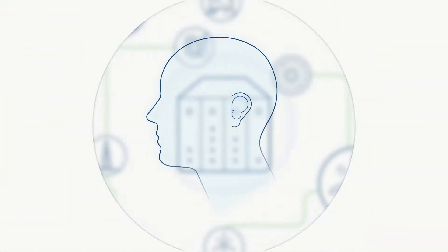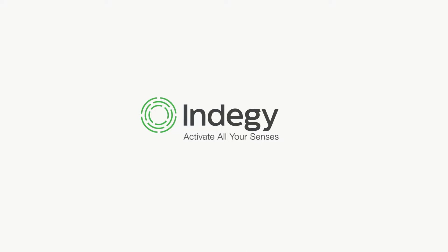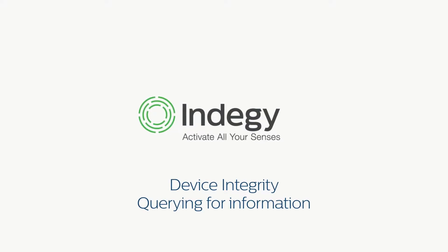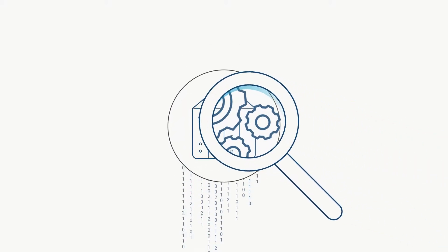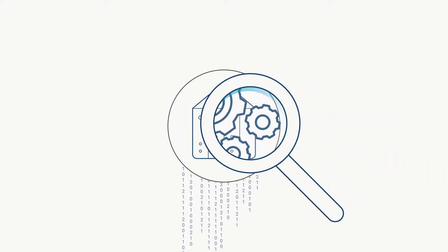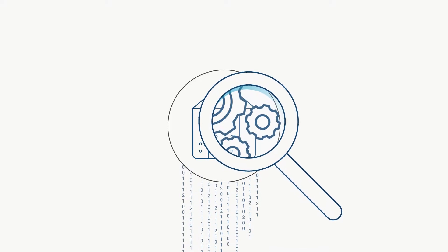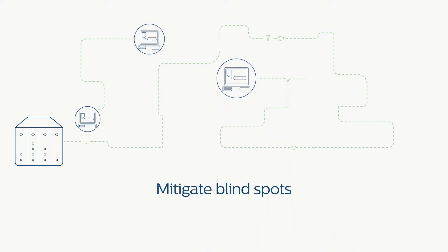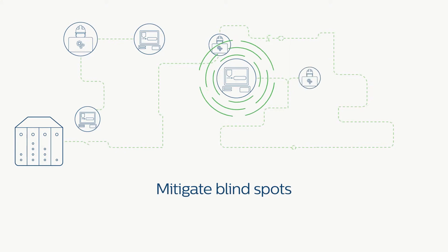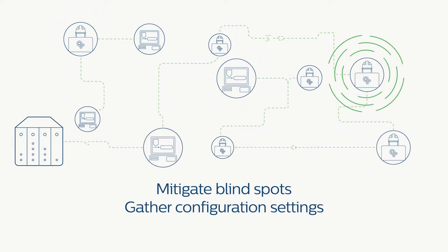In addition to network monitoring, IndiG has developed the option for device integrity. It queries devices in their native supported language and gathers specific configuration settings. It helps mitigate network-only monitoring blind spots that can miss critical non-network data, such as local changes in device information.